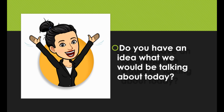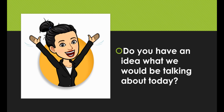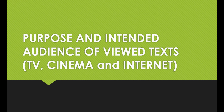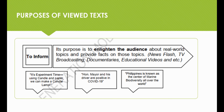So do you have an idea what we will be talking about today? We will be talking about the purposes and intended audience of what you see on TV, cinema, and internet. For this lesson, we will discuss three purposes for the shows and programs you see. The first one is to inform — its purpose is to enlighten the audience about real-world topics and provide facts on those topics. Examples are newsflash, TV broadcasting, documentaries, and educational videos.